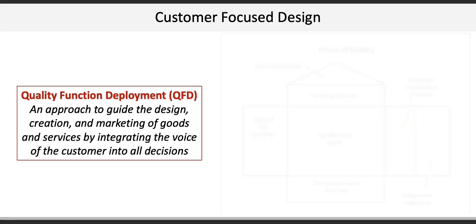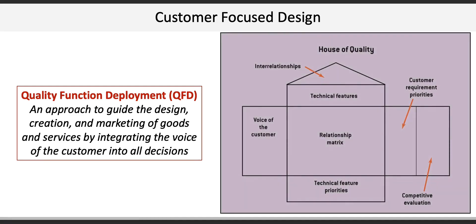QFD can be visually articulated using a house of quality. A house of quality identifies key technical features and the strength of interrelationships between them, identified on the roof of the house. For example, how closely related are price and size? The voice of the customer helps determine key requirements they deem to be important, such as taste or nutrition.